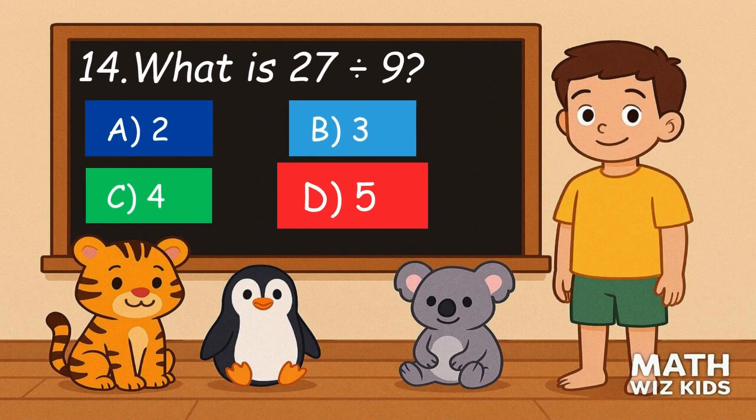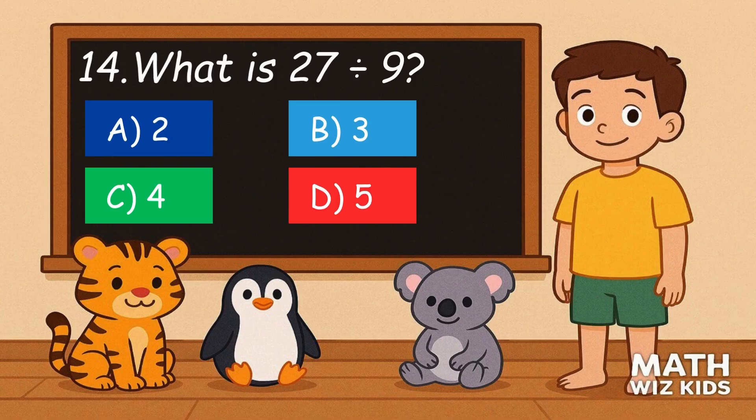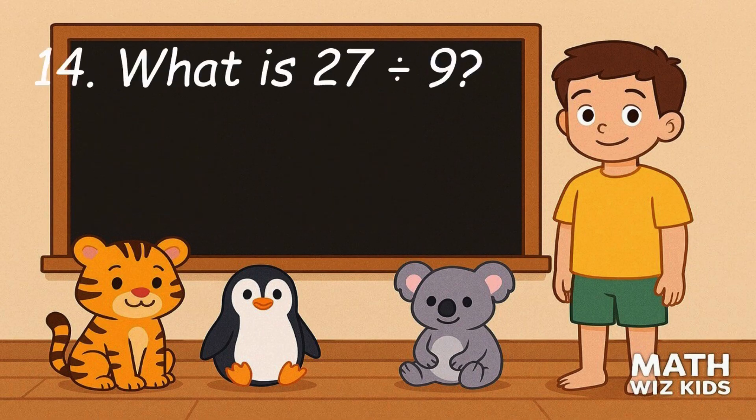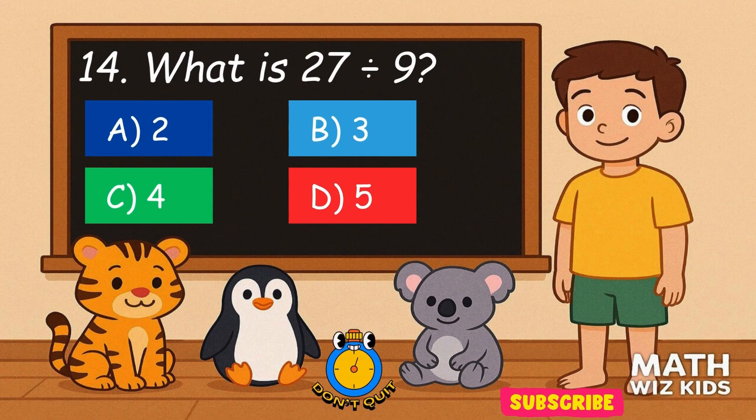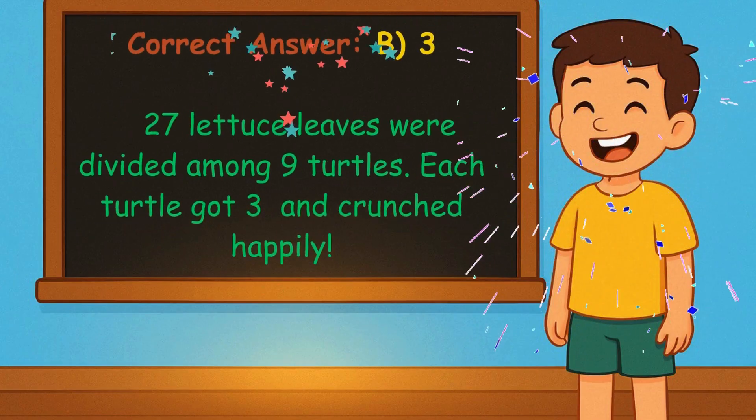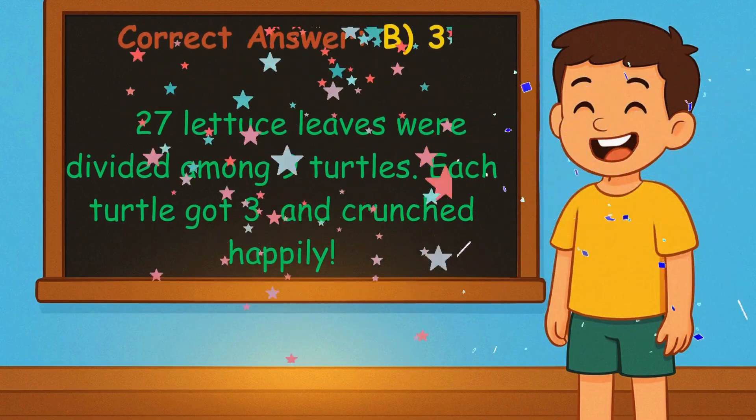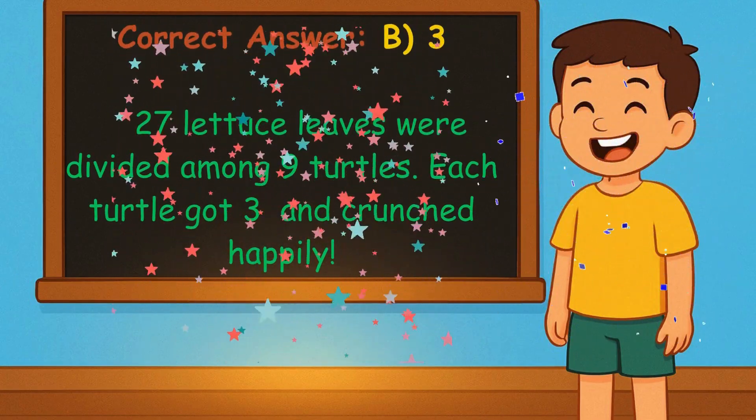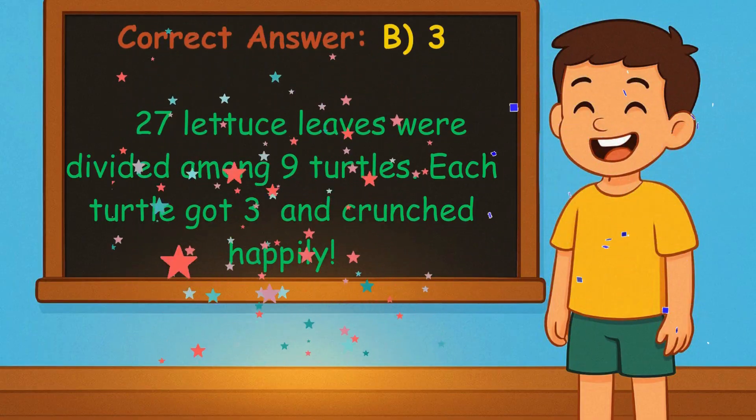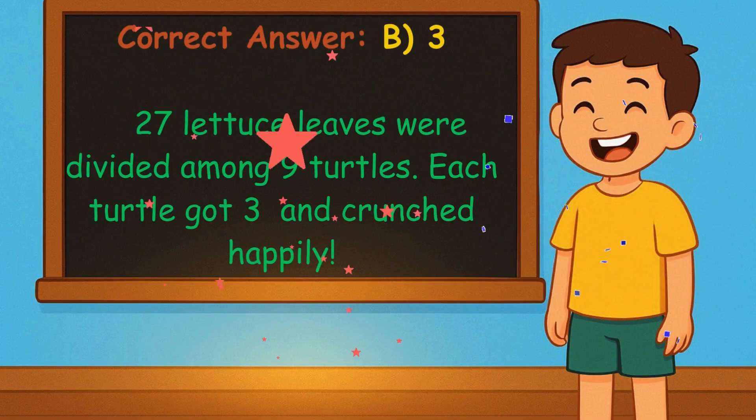14. What is 27 divided by 9? Is it A, 2, B, 3, C, 4, or D, 5? Correct answer is 3. 27 lettuce leaves were divided among 9 turtles. Each turtle got 3 and crunched happily.